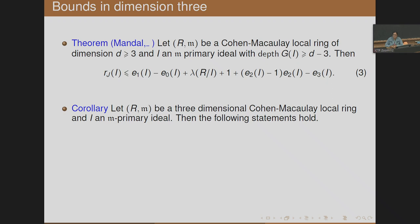For a Cohen-Macaulay local ring of dimension strictly larger than 2, if depth of G(I) ≥ D − 3, then r_J(I) is less than or equal to Rossi's bound plus additional terms E_2(I)(E_2(I) − 1) − E_3(I). So the second and third Hilbert coefficients enter the picture when moving to dimension 3. For small values of E_2, say E_2 = 0 or E_2 = 1, we obtain a linear bound. In general, our result contains a quadratic term in E_2.